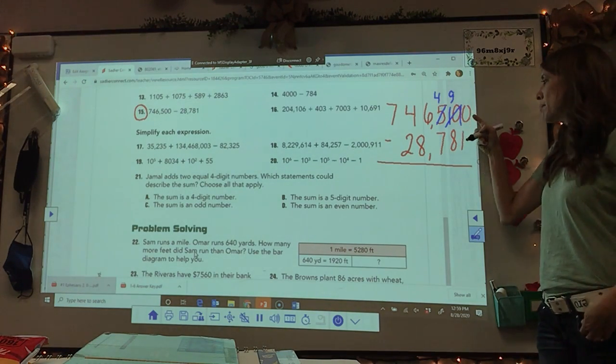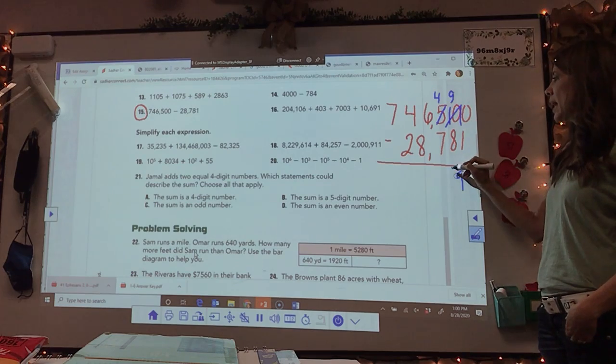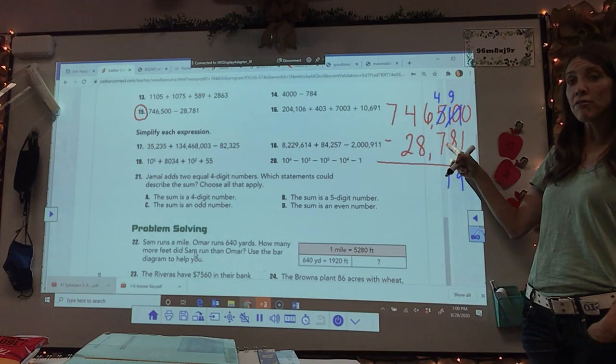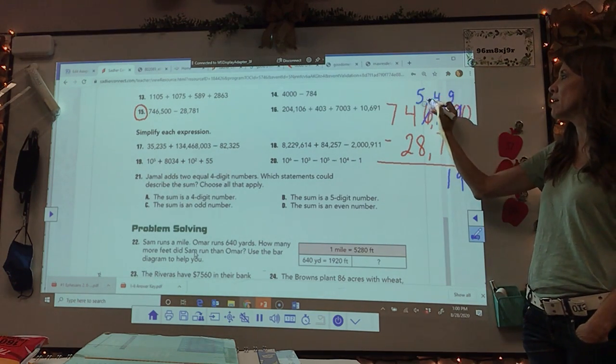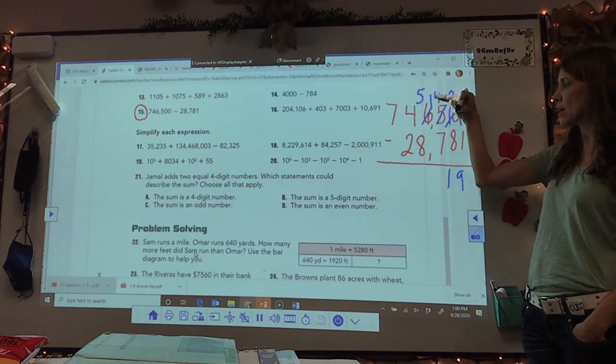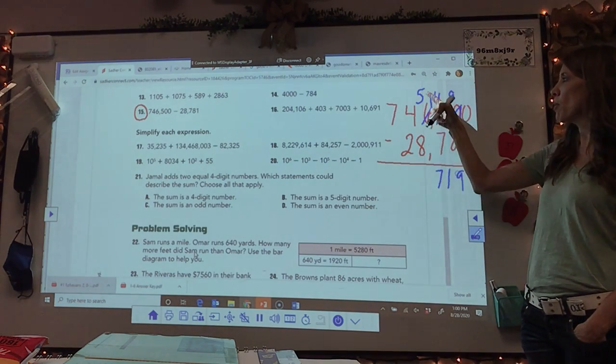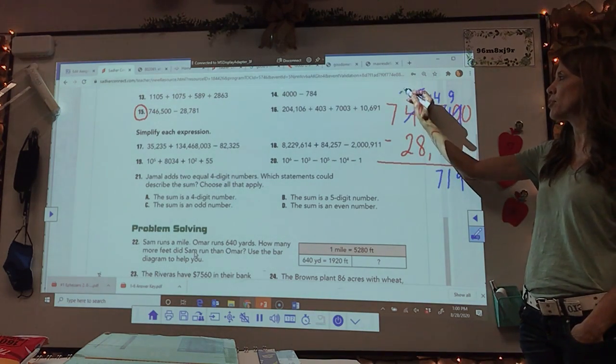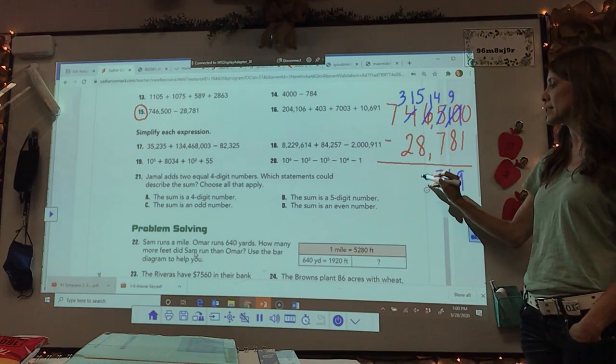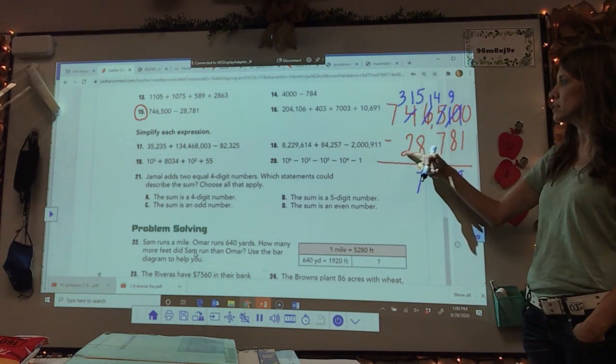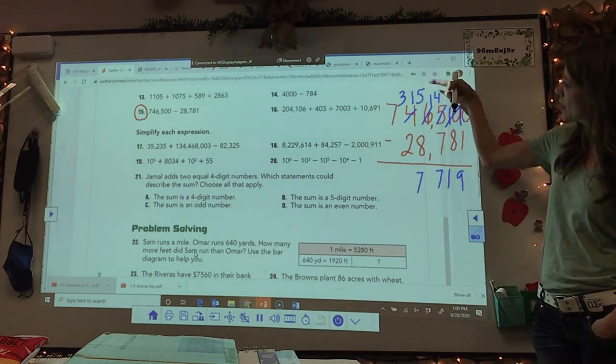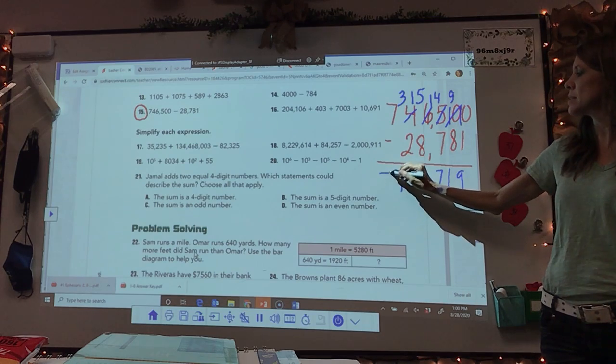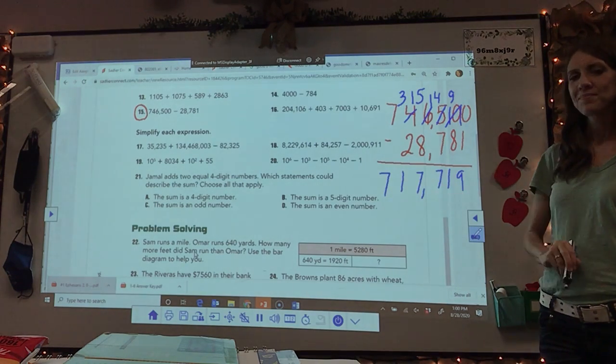10 minus one is nine. Nine minus eight, four minus seven. You can't do it. Where do I borrow from? The six. The six. He becomes a five. That becomes a 14. Now can I take 14 minus seven? Yes. Seven. What about five minus eight? No. So who do I borrow from? The four. The four becomes a three and now I have 15. 15 minus eight. That I can do. Can I take three minus two? Yes. One. And then seven comes down. Okay. I got a tough one I want to give you. Who got this one right? Raise your hand. Nice.